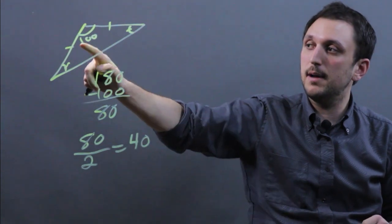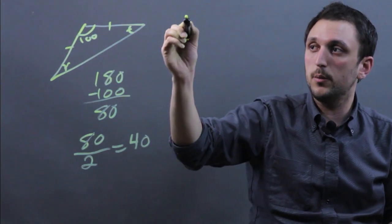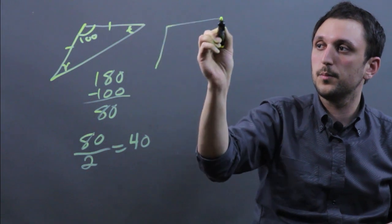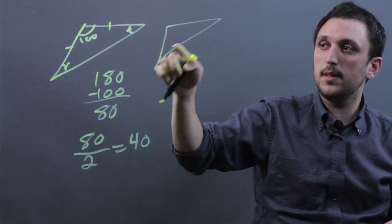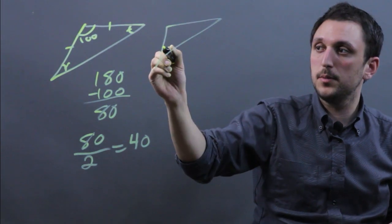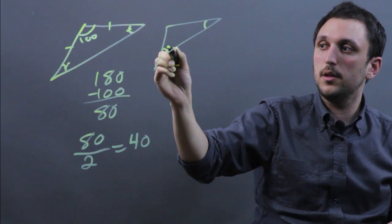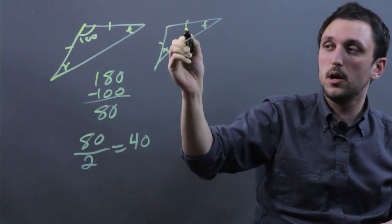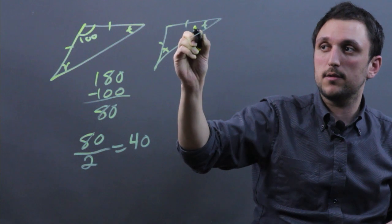Now, assuming we didn't have this angle and we had one of the others, it would look like this. Here we know again that these two are probably the same. These are still going to be the isosceles sides, but let's say they gave us 40 for this angle.